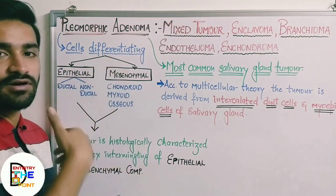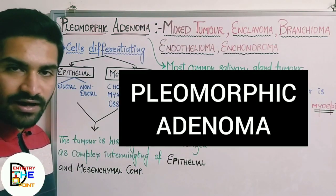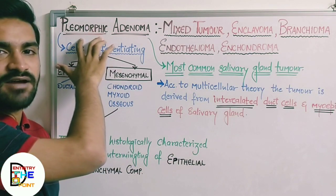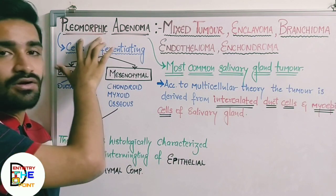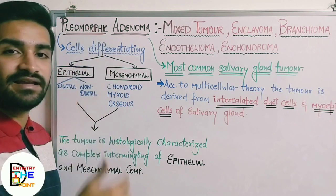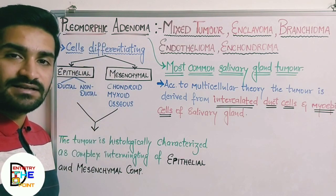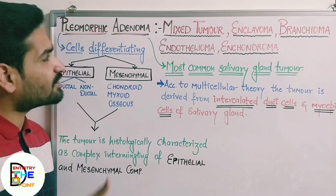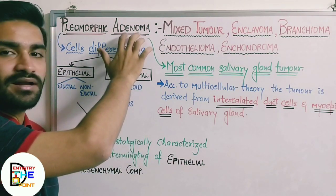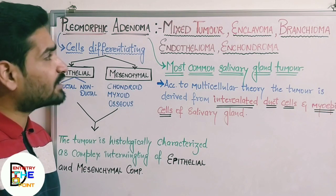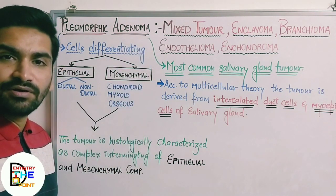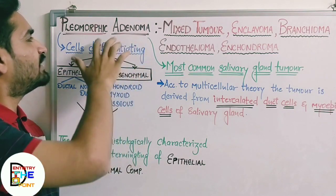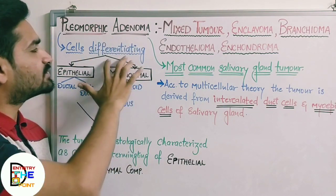So, pleomorphic adenoma means any such type of tumor which histologically shows variation in the type of cells — in size, shape, and staining of the nucleus — along with the tumor being benign in origin and arising from the glandular component of the epithelial cells.